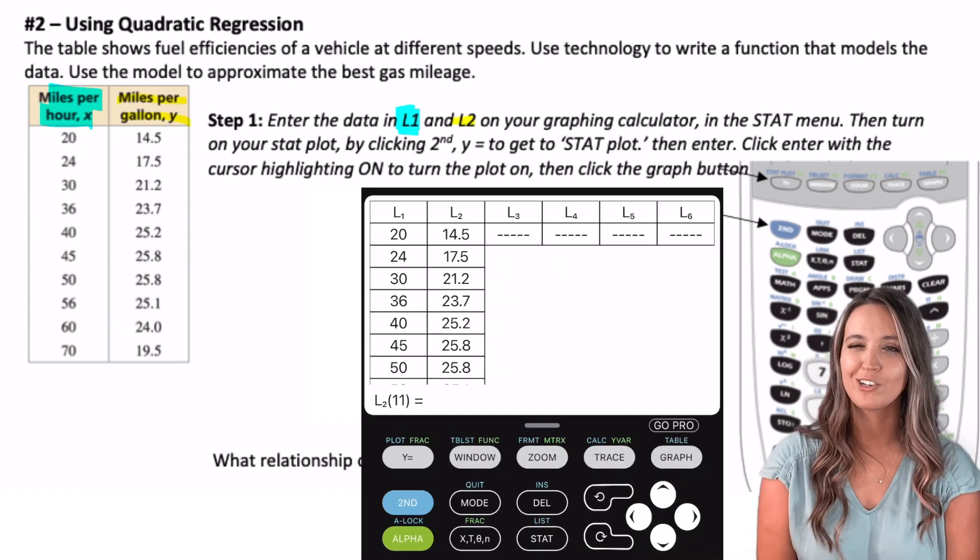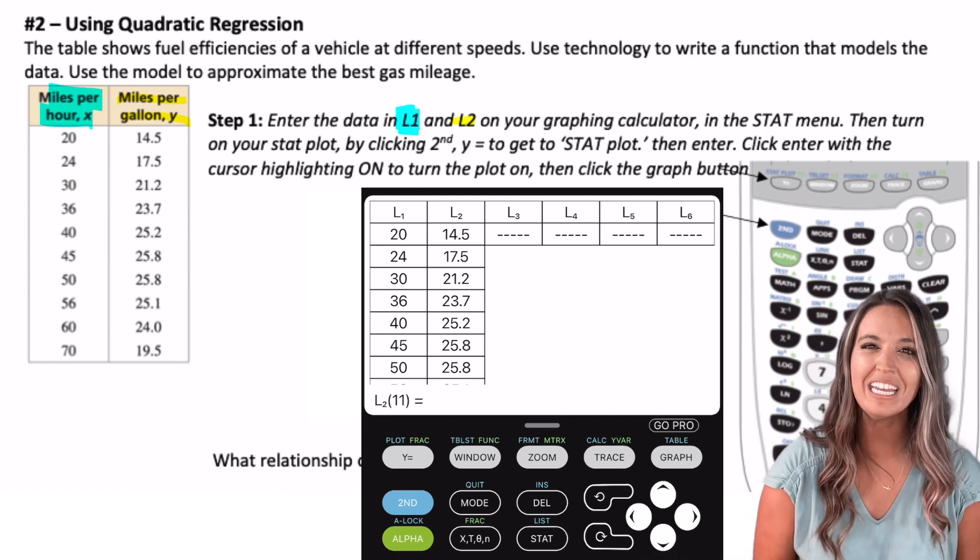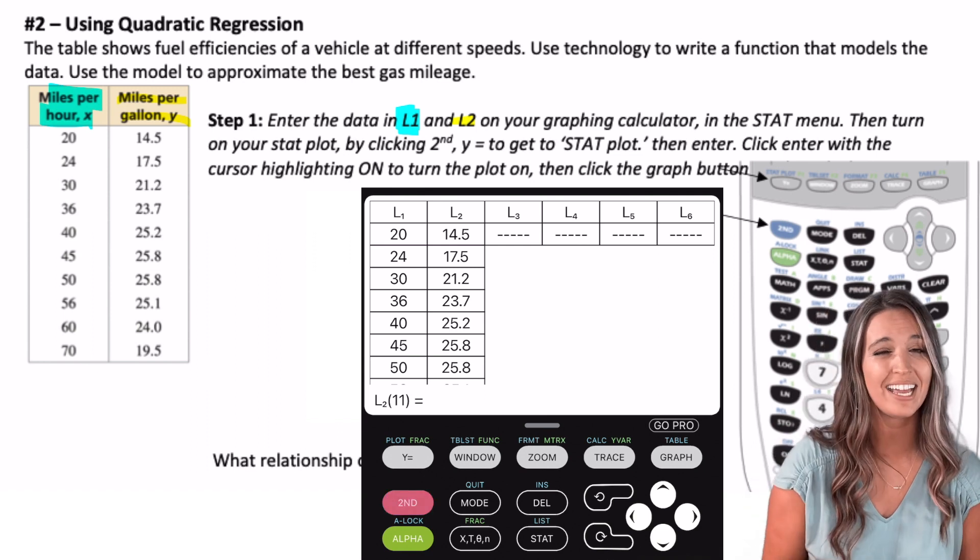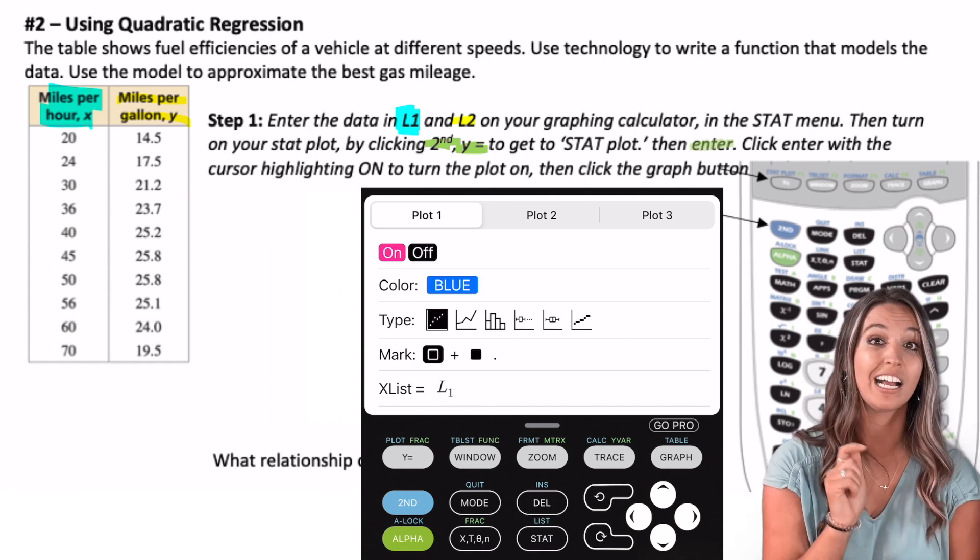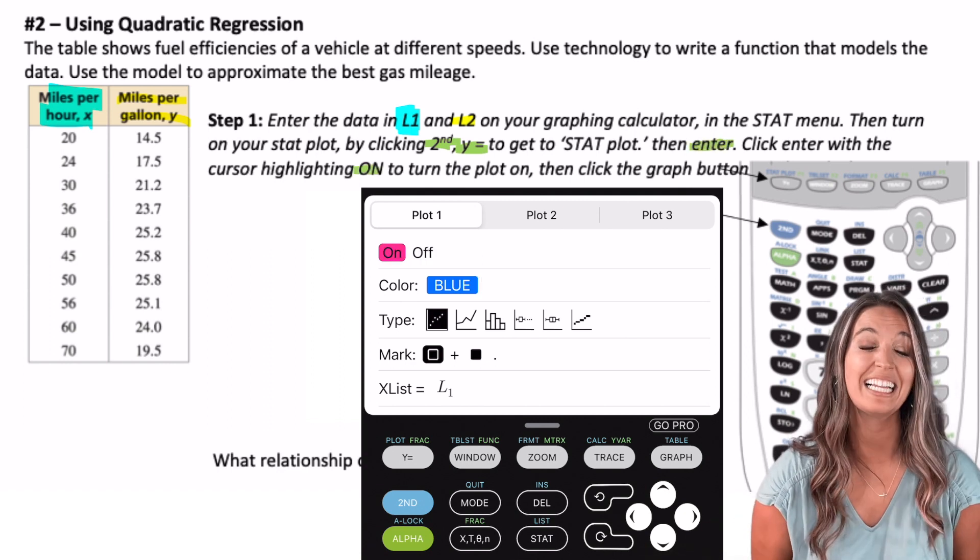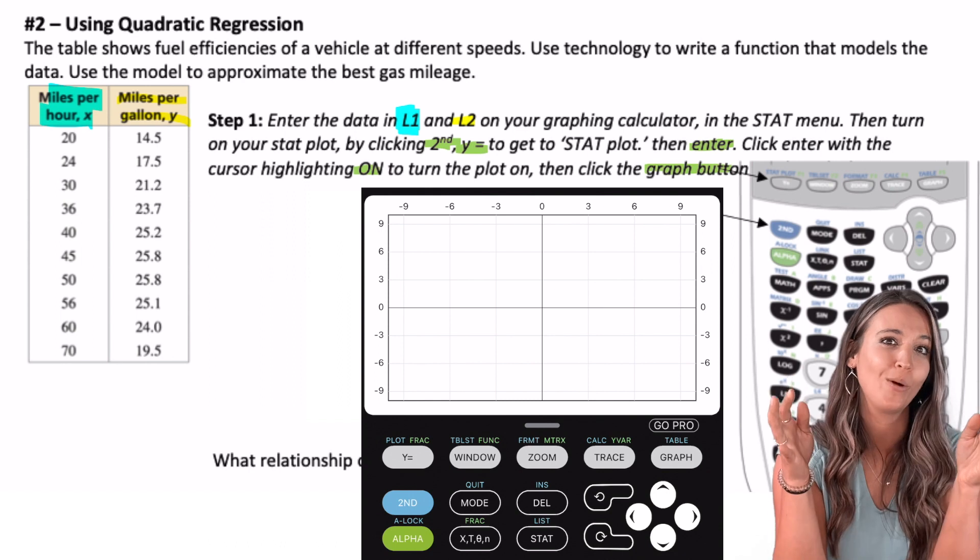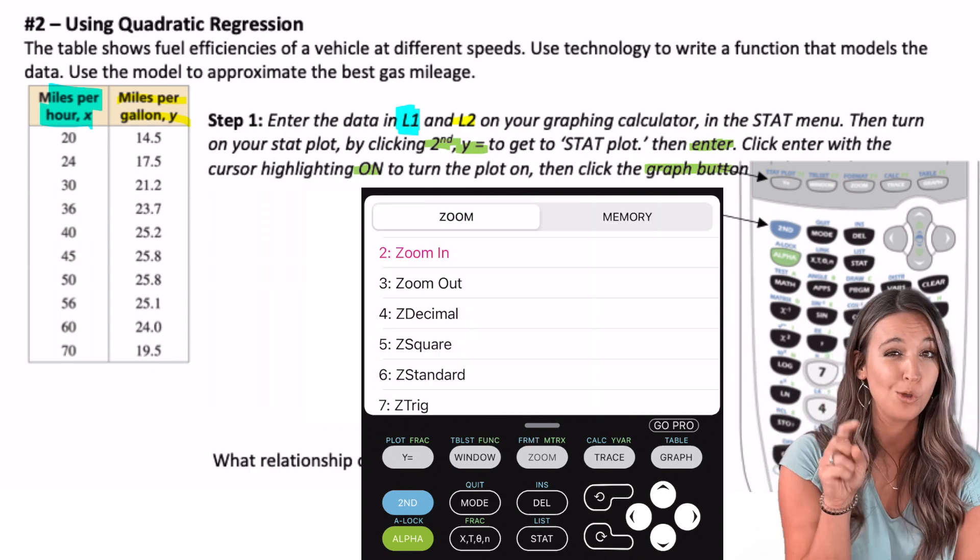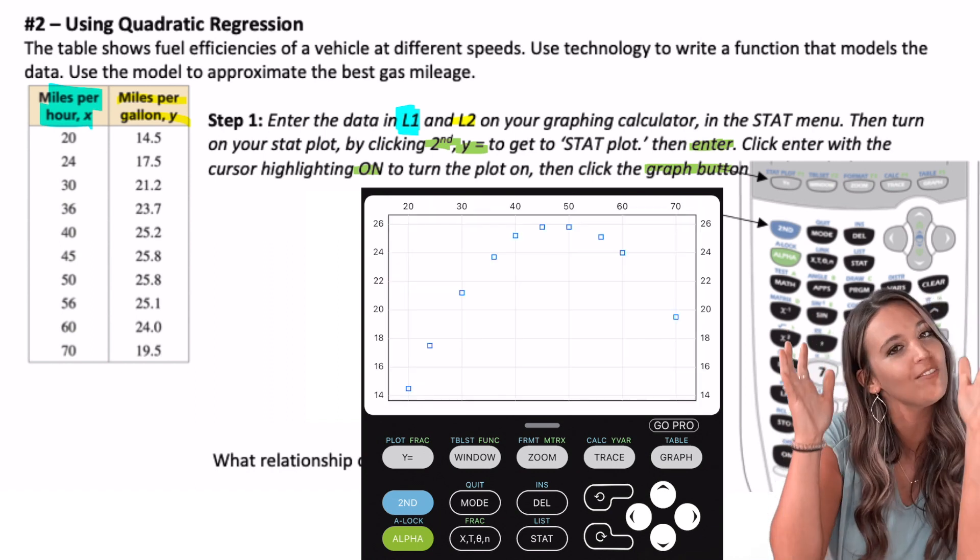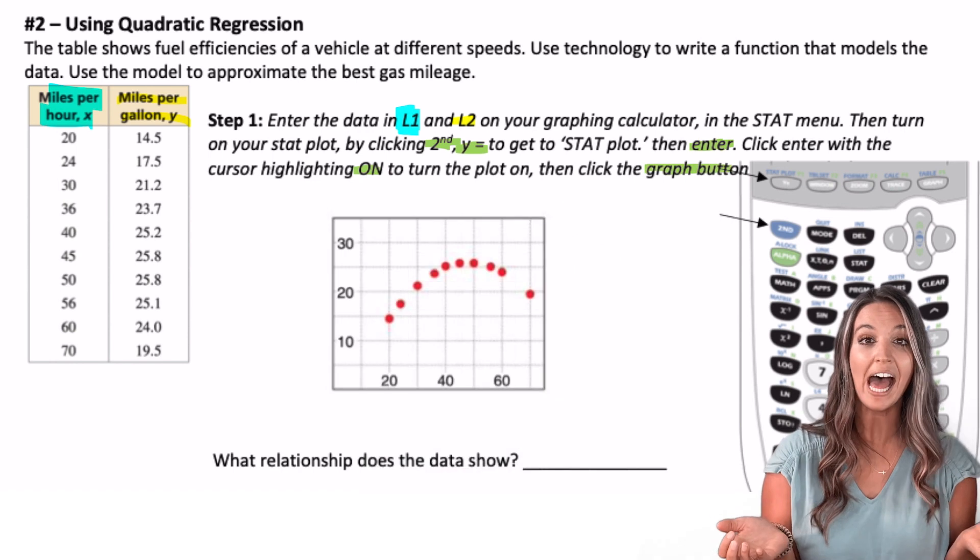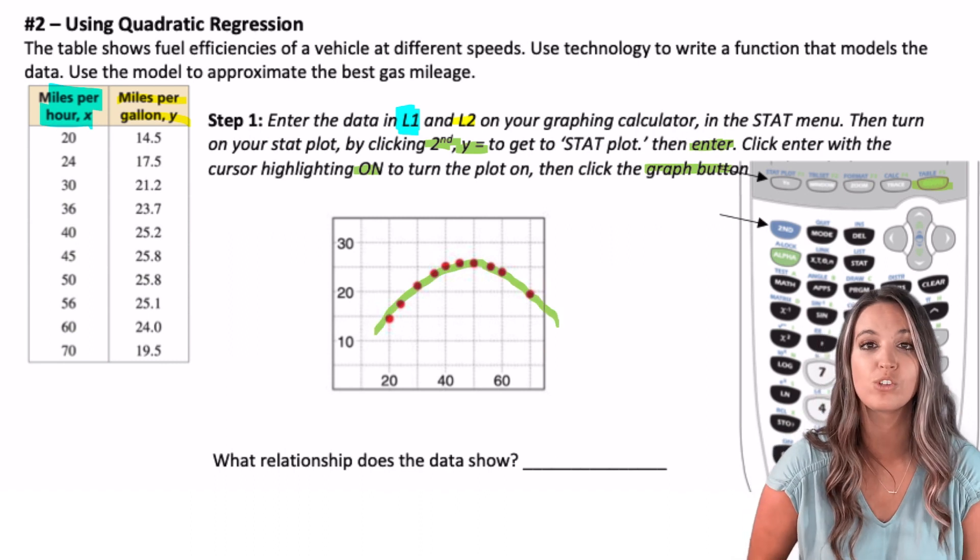We want to look at what type of relationship this data models. We need to see a scatter plot. To do this on our calculator, we need to turn our stat plot on. So we click second y= to get to stat plot. Then we scroll to the left and click on enter. Now I can click the graph button. In order to see our data, we need to make sure our window is set so that all of our points can appear. To do this quickly, we could press the zoom button and then scroll down to the ninth option, stat. Then all of our data will appear in our window. And look at that! My data kind of looks like an upside down parabola. So this relationship is quadratic.